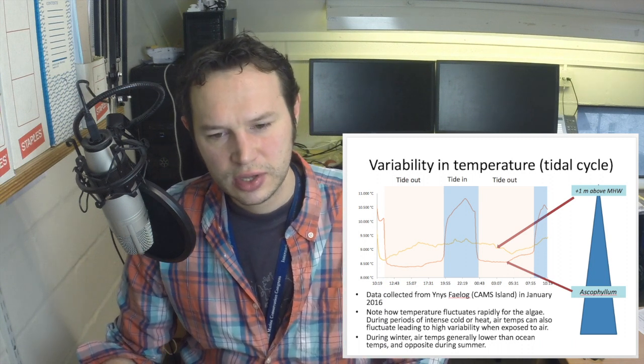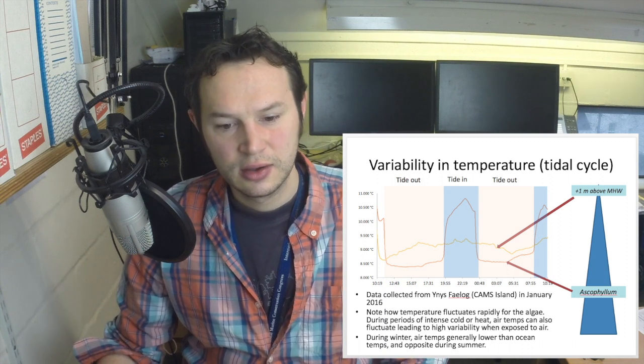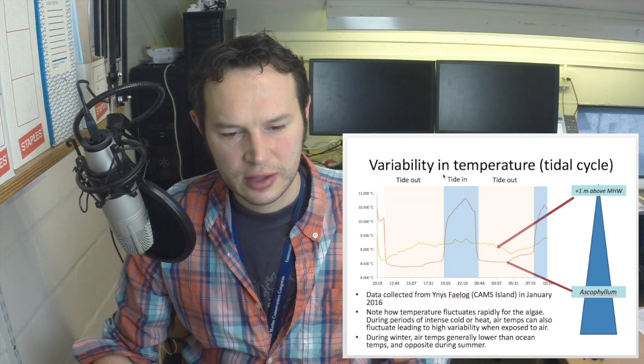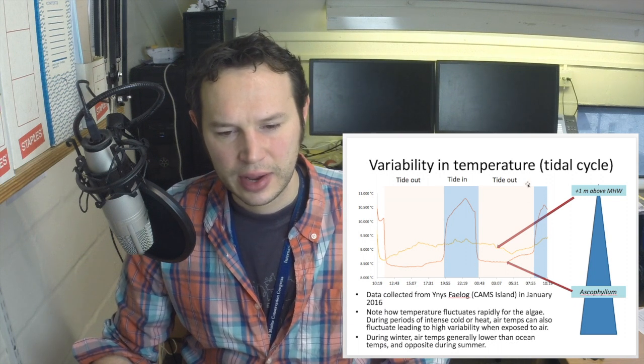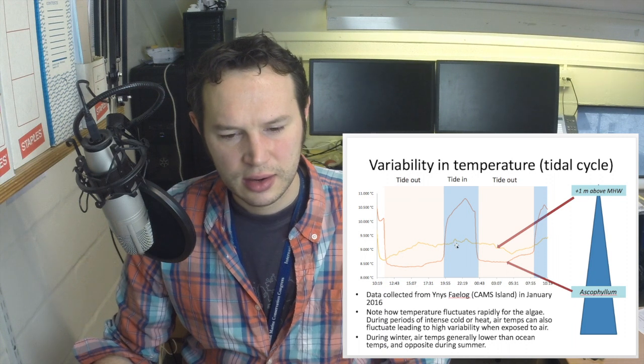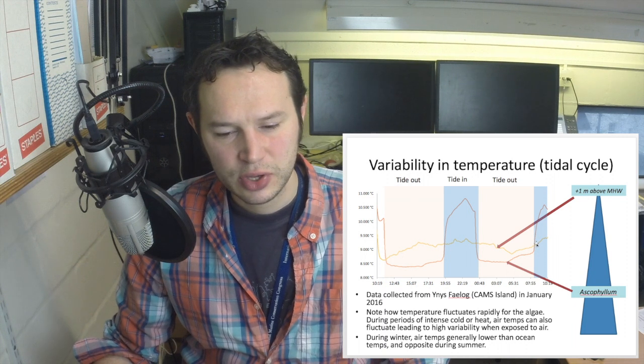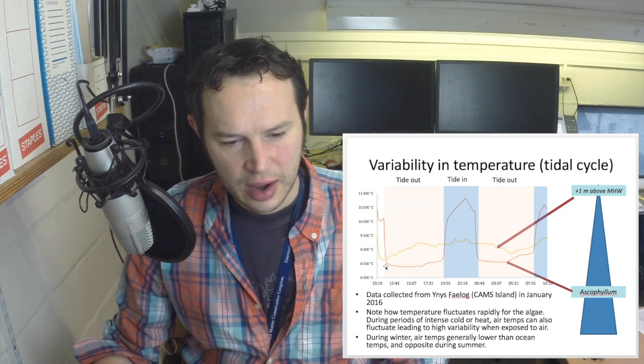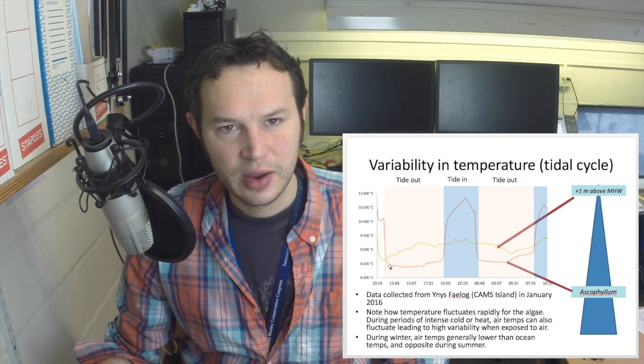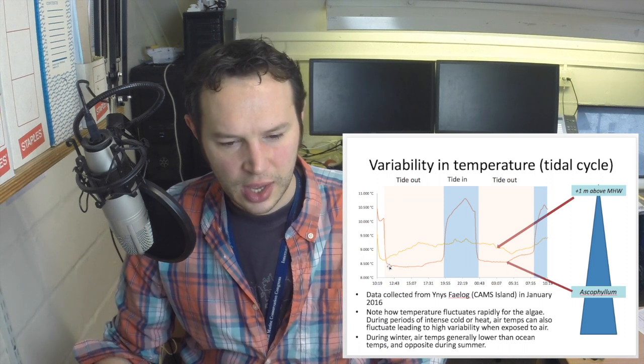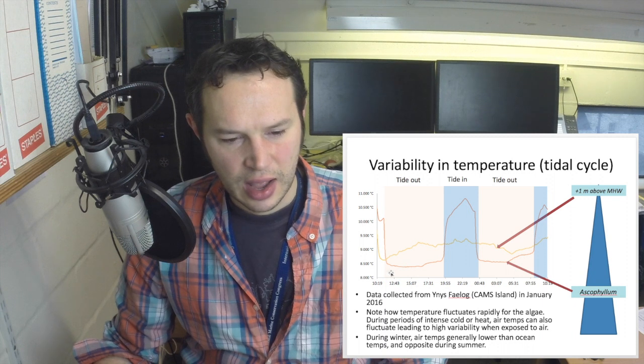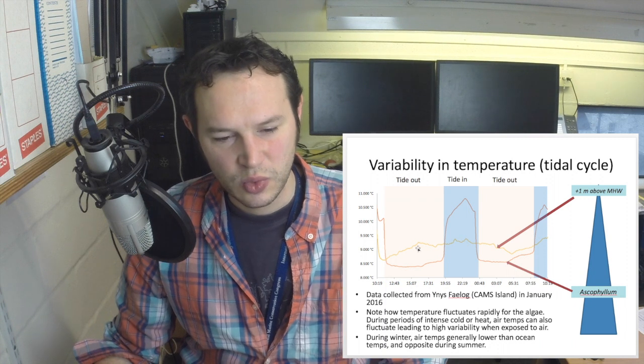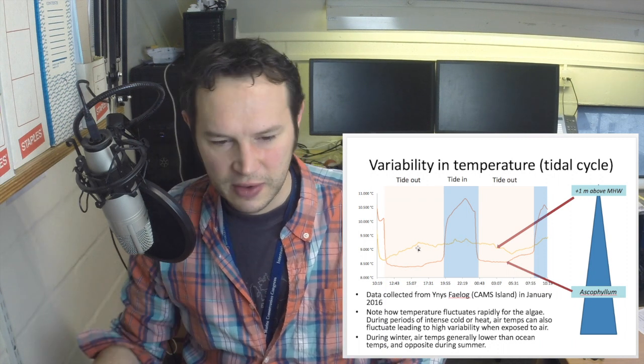Here we have a plot that shows just how temperature can vary at very high frequency. We have tide out, which is the orange blocks, the blue shaded blocks tide in, and then tide out again. We can see here the orange line is the temperature, air temperature, above one meter above high water mark. The dark orange line shows the temperature which is in the Ascophyllum zone, so kind of mid to low shore. And we see here that when it's tide out, the air temperature is fairly low, nearly at the Ascophyllum zone. I don't think the two temperature sensors are calibrated well to one another. So that's why we've got a bit of variability.